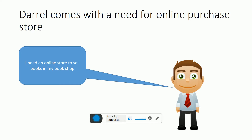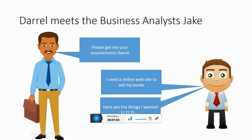Darrell is a bookstore owner who sells books. He has a bookstore in London. Darrell wants to open up an online bookstore where he can sell books online to customers worldwide. He comes up with this idea and meets Jake, the business analyst of ABC Software.